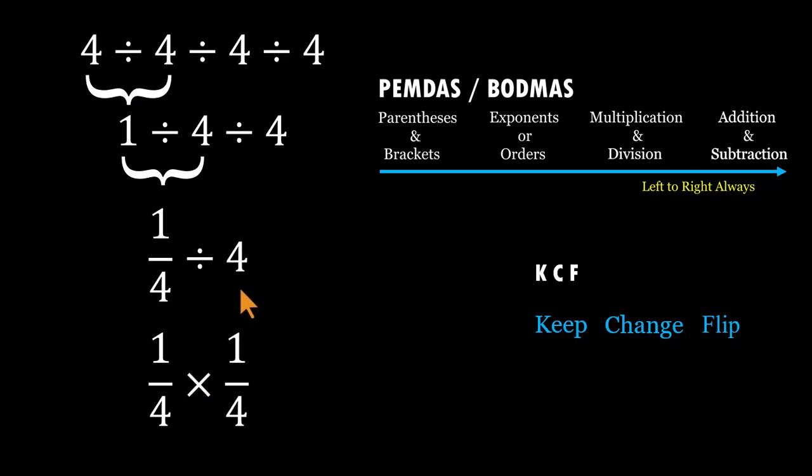Flip the four into one over four. So one-fourth divided by four becomes one-fourth times one-fourth. Multiply straight across, one on top. Four times four is 16 on the bottom. That gives us the correct answer.